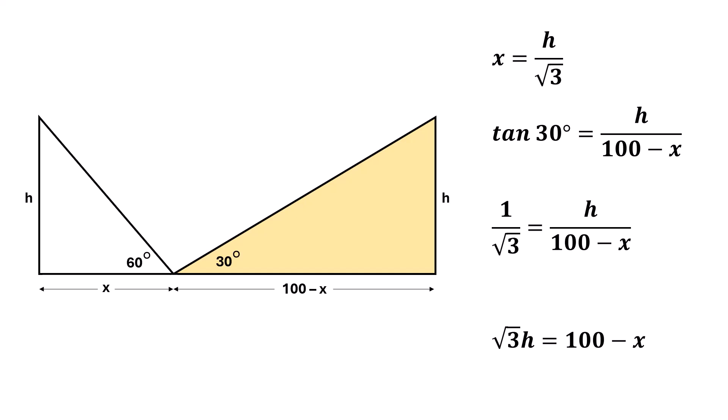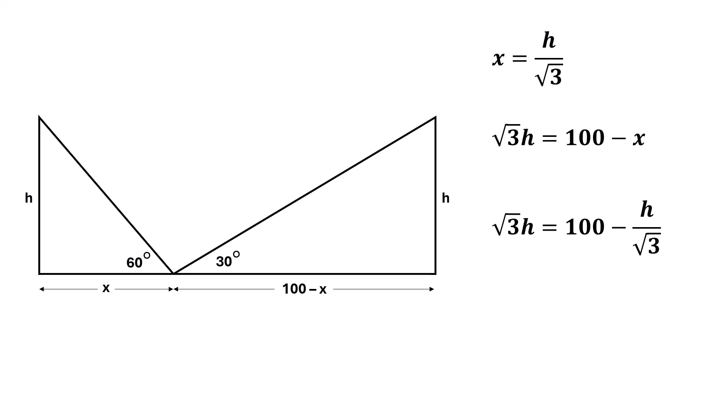Now, substituting the value of x from earlier, we can write square root of 3 times h equals 100 minus h over square root of 3.